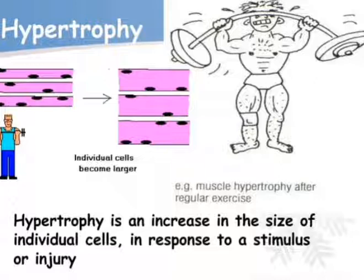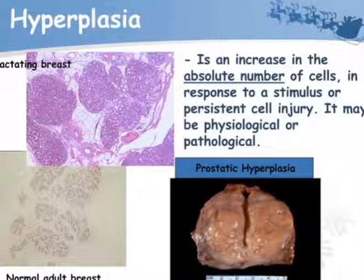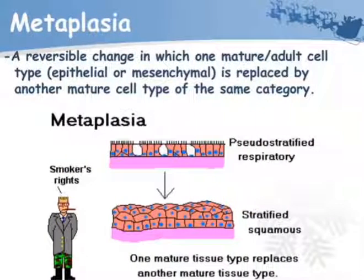Hypertrophy is an increase in the size of individual cells in response to a stimulus or injury. Atrophy is a decreased size and weight of the organ due to decreased size and number of its component cells. Hyperplasia is an increase in the absolute number of cells in response to a stimulus or persistent cell injury; it may be physiological or pathological. Metaplasia is a reversible change in which one mature adult cell type is replaced by another mature cell type of the same category.